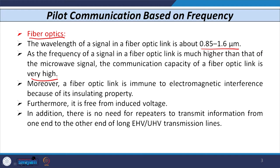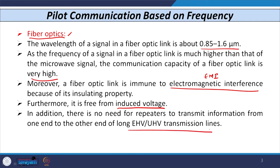Moreover, the fiber optic link is immune to any electromagnetic interference, so there is no EMI interference. Furthermore, it is free from induced voltage — the problem of induced voltage on parallel conductors is also rectified with fiber optic. In addition, there is no need for repeaters to transmit information over long EHV transmission lines. Because of all these advantages, fiber optic communication is widely used nowadays.